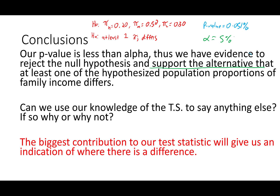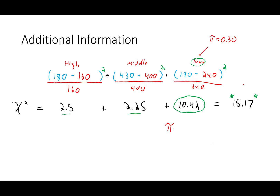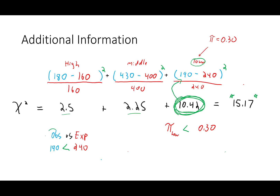So one thing we can do is look at the biggest contributor to our test statistic, and we would have evidence that that population proportion differs from what we expected. Going back to our test statistic, we have evidence that the population proportion of low-income differs from 0.30. Can we go a step further? Well, if you remember, we're comparing observed versus expected frequencies — that's how we're essentially testing this claim. And we observed 190 low-income families, but we expected 240. So what we observed was less than what we expected.